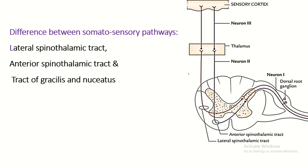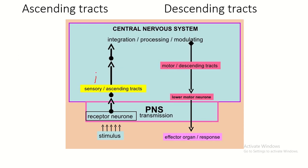First, what is a tract? A tract is a collection of axons within the central nervous system. There are two types of tract: one is the ascending tract, another is the descending tract. The descending tract carries motor information from the brain to the effector organ, for example skeletal muscle.